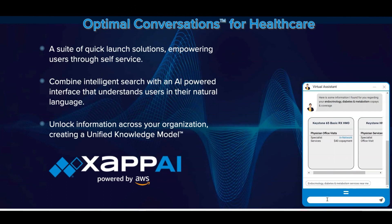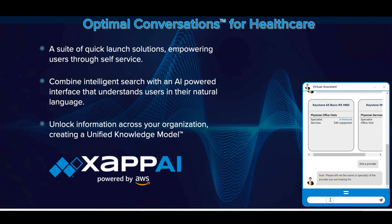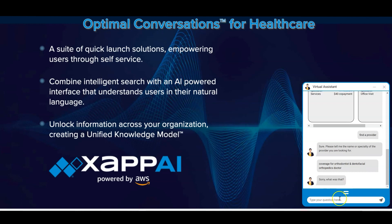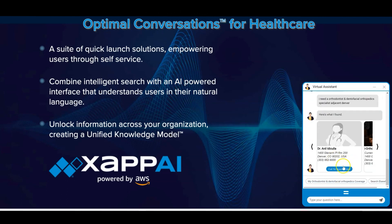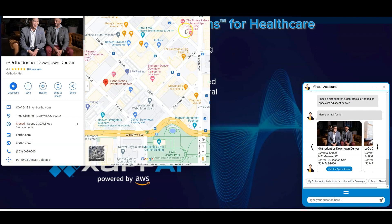I can ask other aspects, for example find a provider. The chatbot will ask me the address, the area, the region where I want to look for something. I can say, for example, dentist — in Denver or something like that. Let's see the options that it will bring. Here is one, and if I select it, it will show me a map and the location where this provider is located.